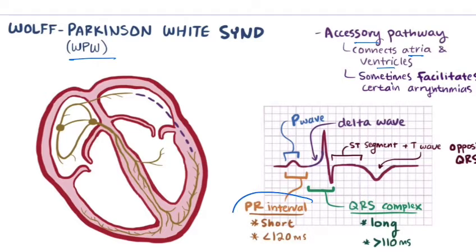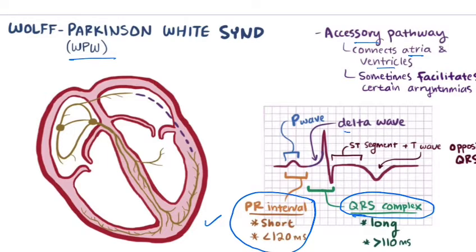The very important ECG findings will be the short PR interval. If you take the QRS complex, you have the wide QRS complex and the presence of the delta wave, where you have slurring of the R wave. If you take the T wave, the T wave will be inverted. So these are the ECG changes in WPW syndrome.